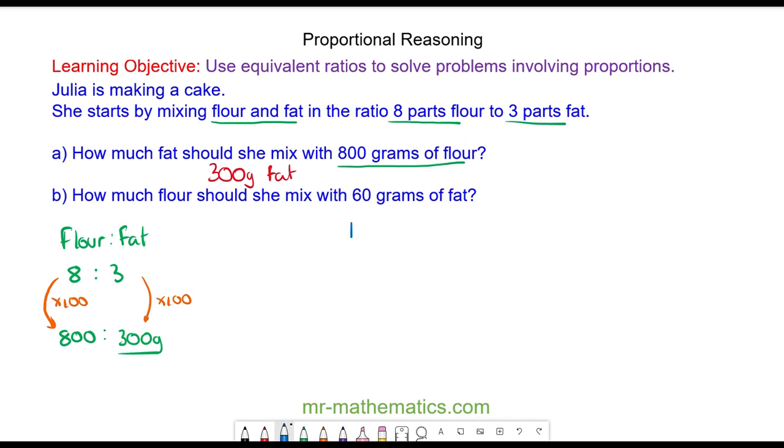For part B we have the same ratio of flour to fat, and we're asked how much flour should she mix with 60 grams of fat. We keep the ratio in balance by multiplying both by 20 because 3 times 20 is 60 and 8 times 20 is 160. So she'll need 160 grams.